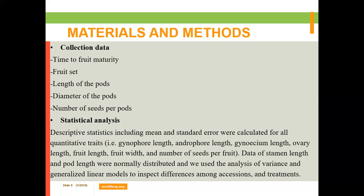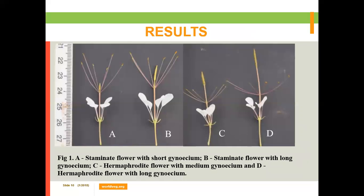We collected data on time to fruit maturity, fruit set, length of the pod, diameter of the pod, and number of seeds per pod. We performed statistical analysis using descriptive statistics; mean and standard error were calculated for quantitative traits. Data on stem, slab, and pod length were normally distributed, and we used analysis of variance and generalized linear models to inspect differences among accessions and treatments.